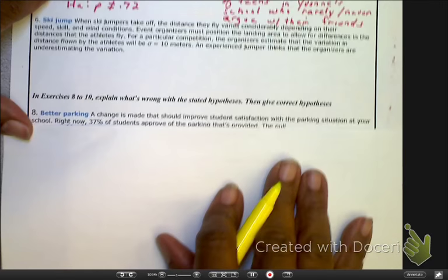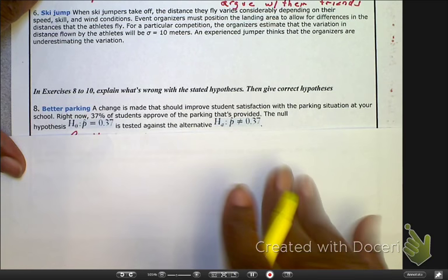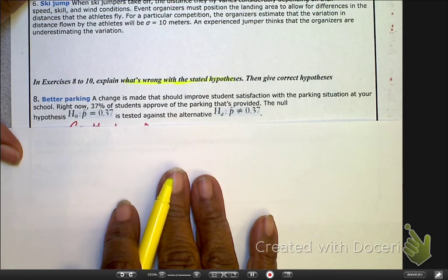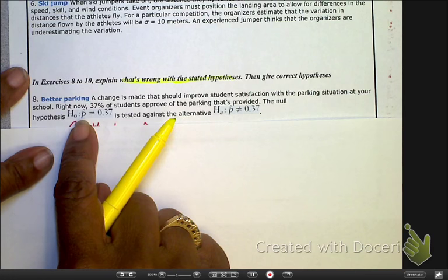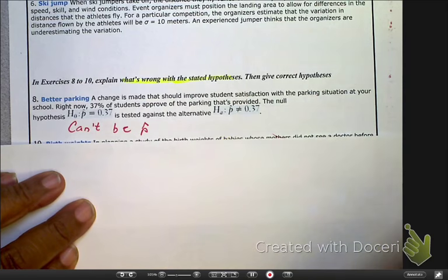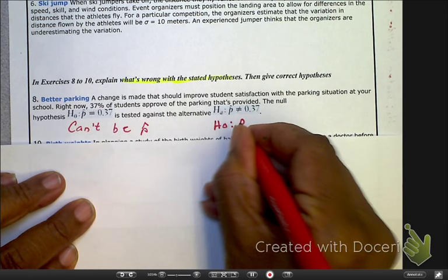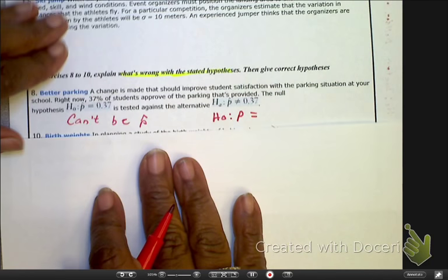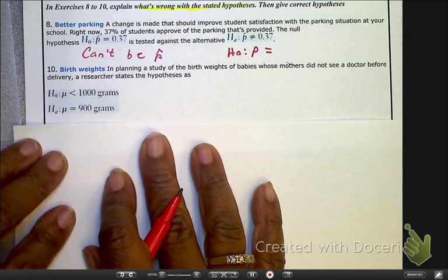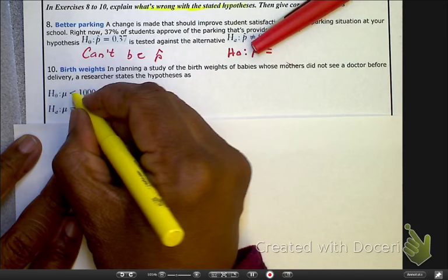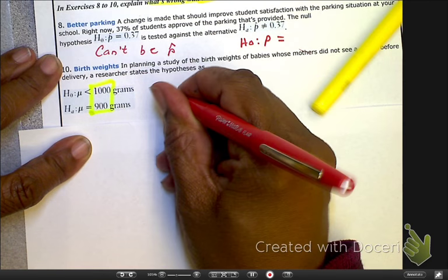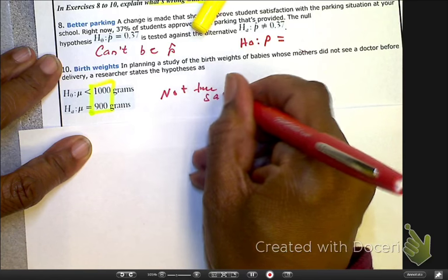And the last example that I want to give, jump down to number 8. Number 8, they're explaining what's wrong with the hypothesis test. So, honestly, I don't even have to read this. See that hat on top of that P? No, it cannot be there. Remember, you cannot put on a hat. Well, the hypothesis test has got to be, it must be something like this. It's got to be P equals. That's what's wrong with that one. And, as we look at number 10, what's wrong here? Well, what's wrong is that it has got to be the same. So, no, not the same.